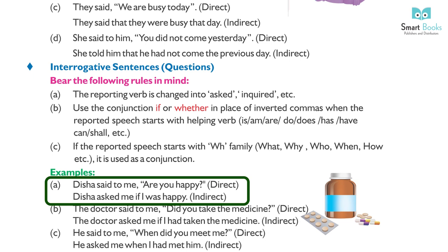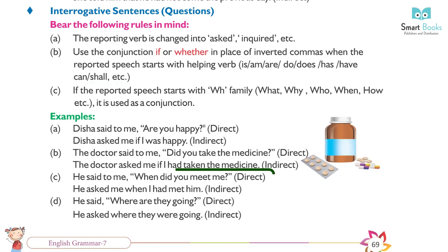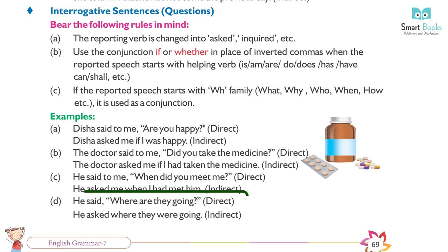Examples for interrogative sentences: (a) Disha said to me, 'Are you happy?' (Direct) → Disha asked me if I was happy. (Indirect) (b) The doctor said to me, 'Did you take the medicine?' (Direct) → The doctor asked me if I had taken the medicine. (Indirect) (c) He said to me, 'When did you meet me?' → He asked me when I had met him. (d) He said, 'Where are they going?' → He asked where they were going.